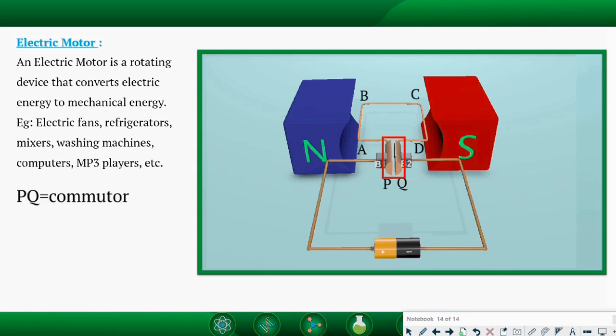The function of split ring here is to change the direction of current in the armature coil because it is a split ring, so it changes its contact with brushes B1 and B2.